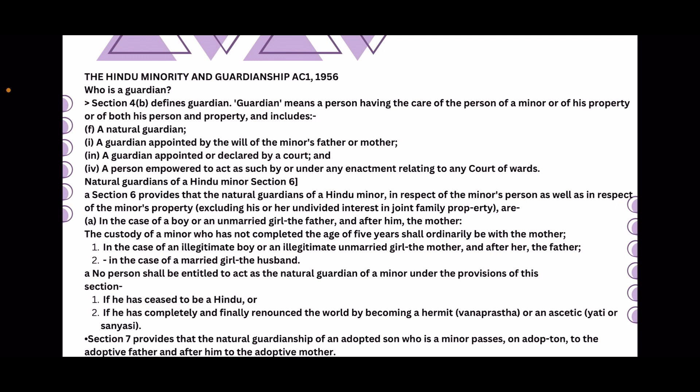Natural Guardian of a Hindu Minor — Section 6. Section 6 provides for the natural guardian of a Hindu minor in respect of the minor's person as well as in respect of the minor's property, excluding his or her undivided interests and joint property.